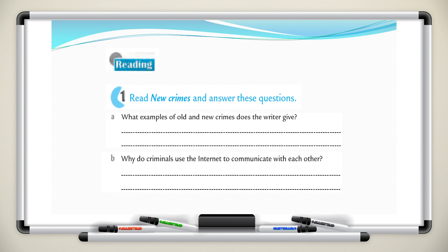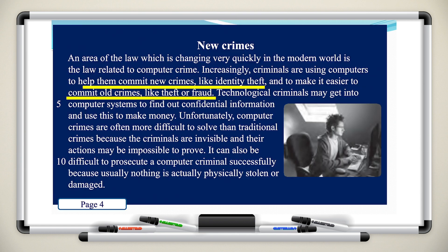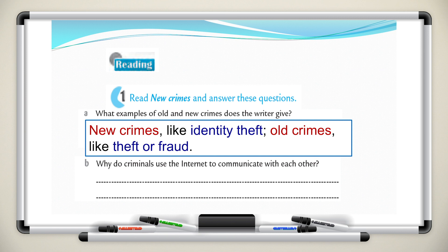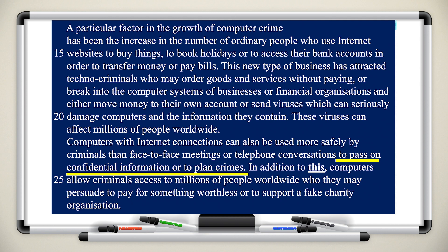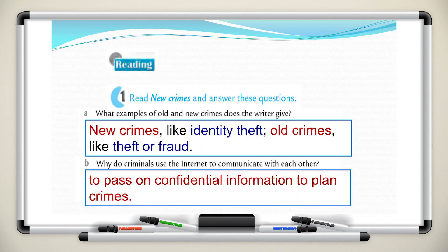Let's read the questions again. First: what examples of old and new crimes does the writer give? Try to go back to the text and underline the answers. You can find the answer right here — new crimes like identity theft, and old crimes like theft or fraud. Second: why do criminals use the internet to communicate with each other? In this paragraph we can see: to pass on confidential information or to plan crimes — they use it more safely.